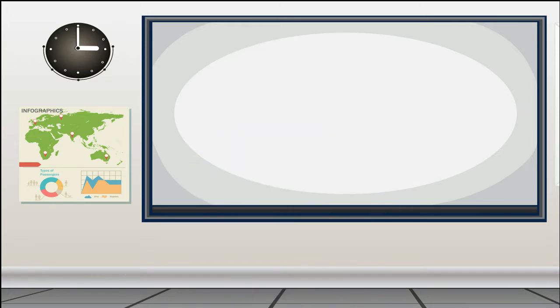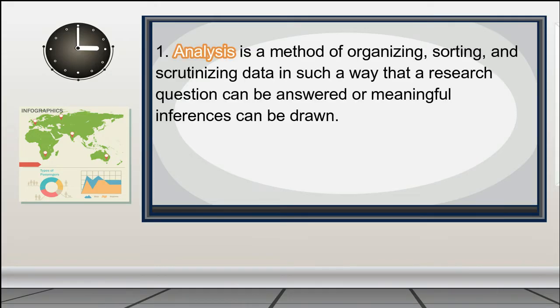Aside from the term research itself, knowing other common research terminologies will help you understand and interpret scholarly journal articles. The following are basic terms and their definitions. 1. Analysis — a method of organizing, sorting, and scrutinizing data in such a way that a research question can be answered or meaningful inferences can be drawn.